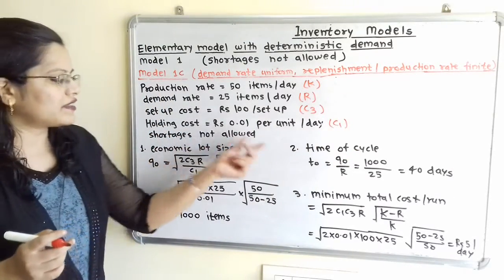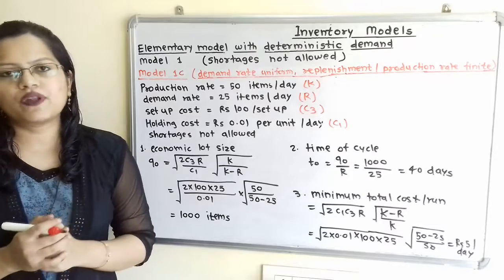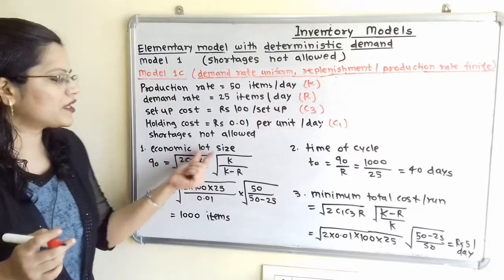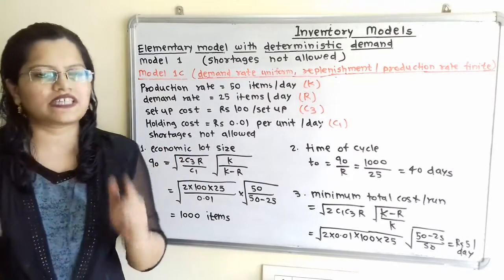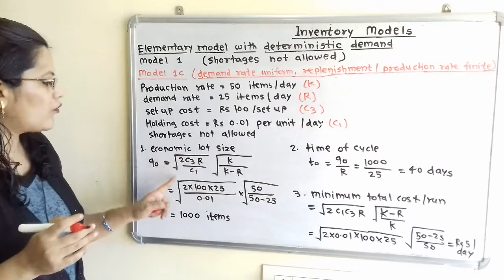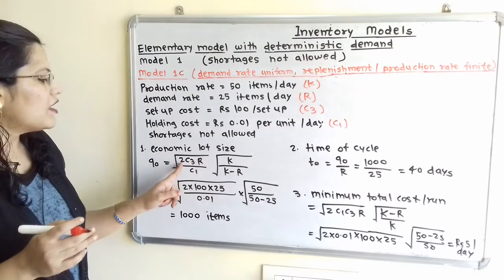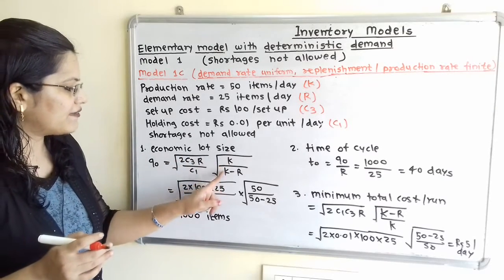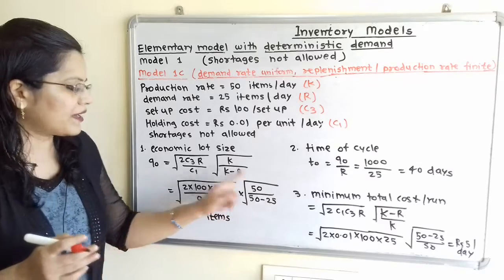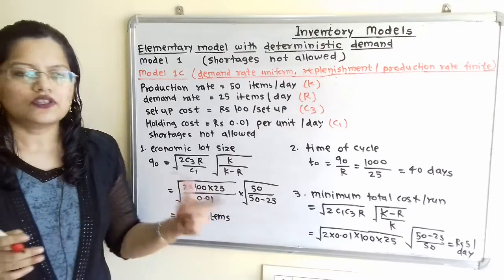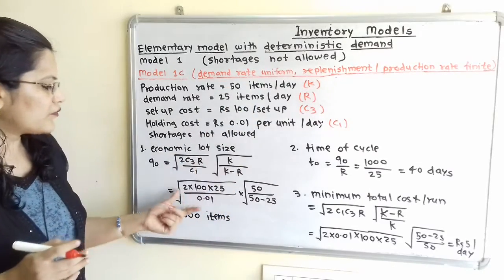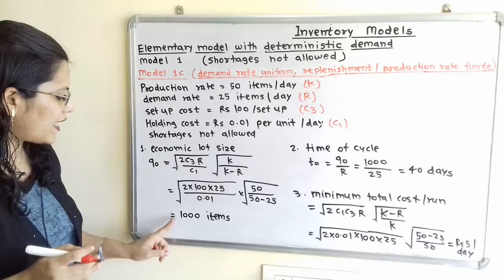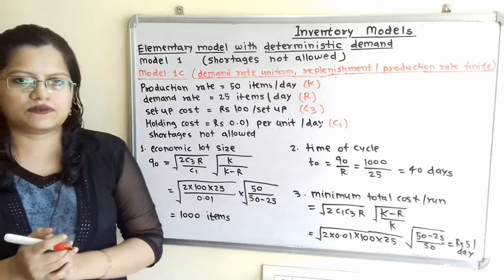Economic lot size: QO = sqrt(2·C3·R/C1 · K/(K−R)) = sqrt(2 × 100 × 25 / 0.01 × 50/25). Solving gives QO = 1,000 items.